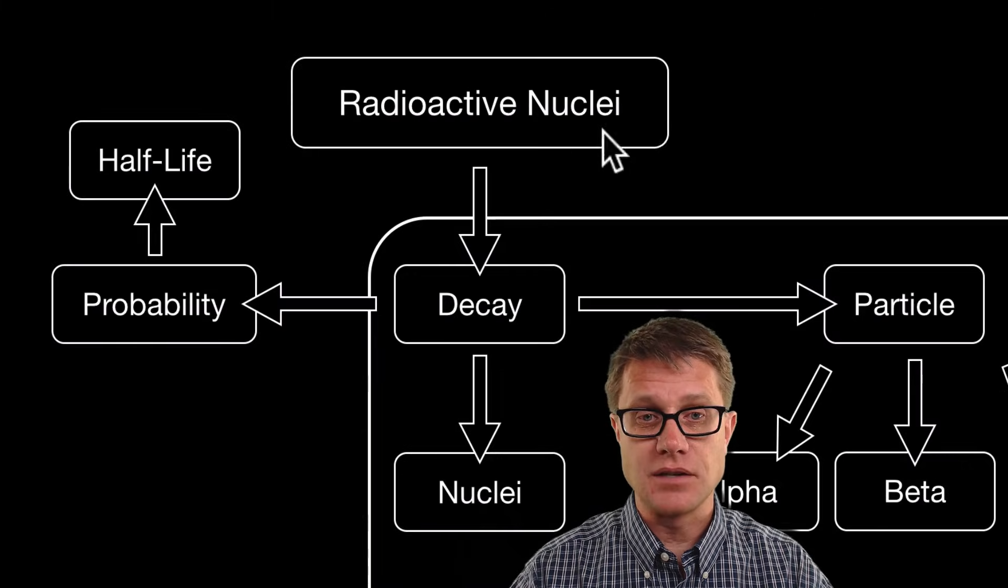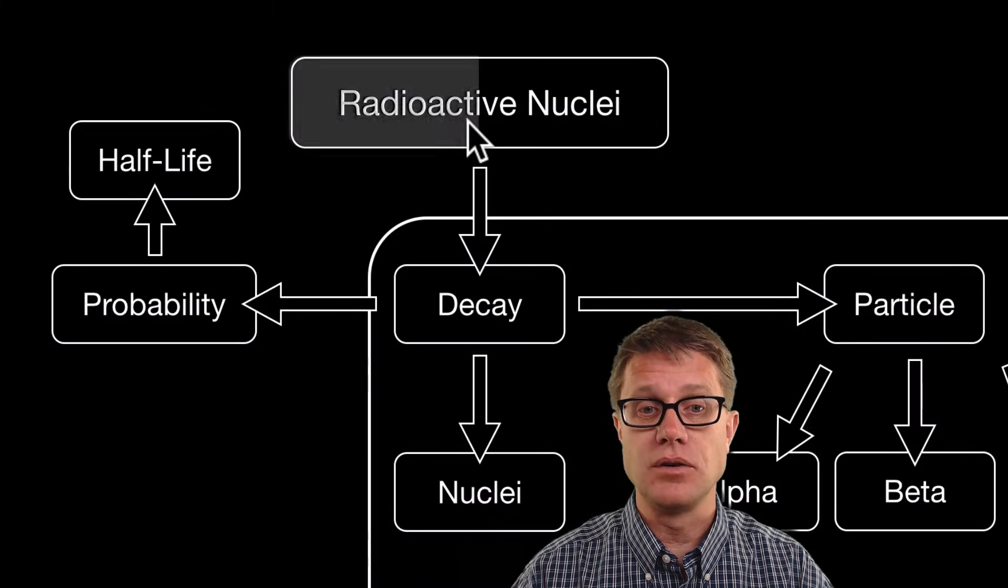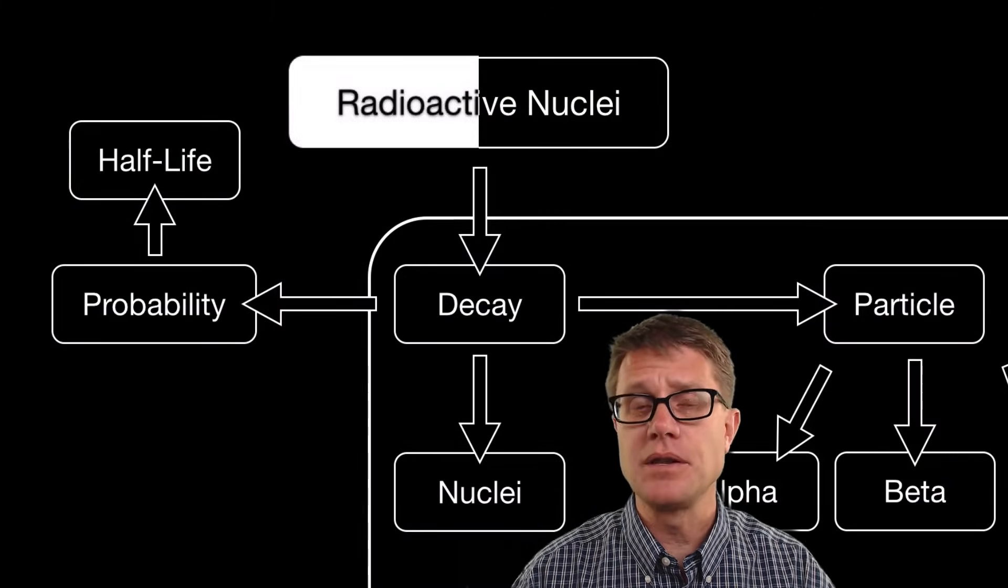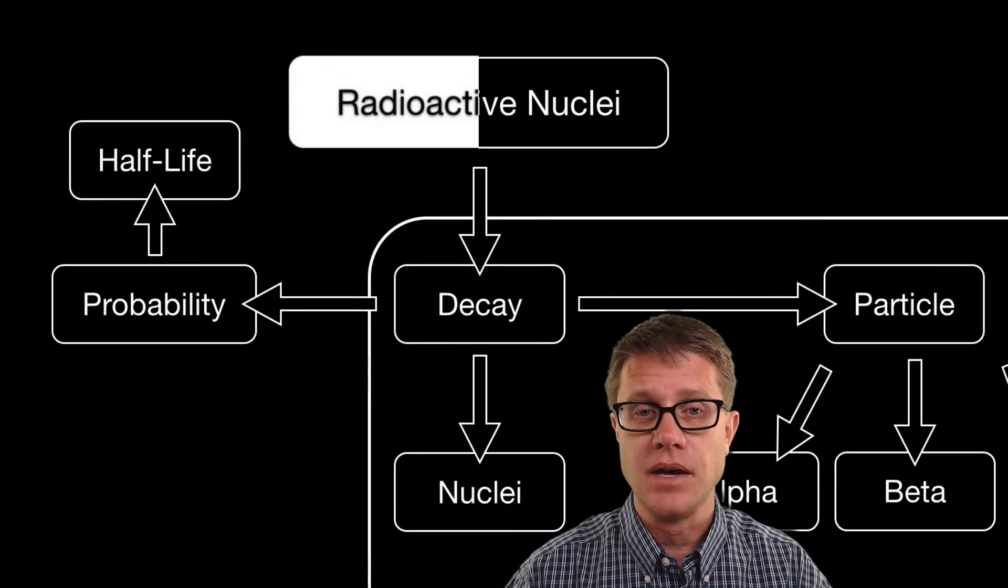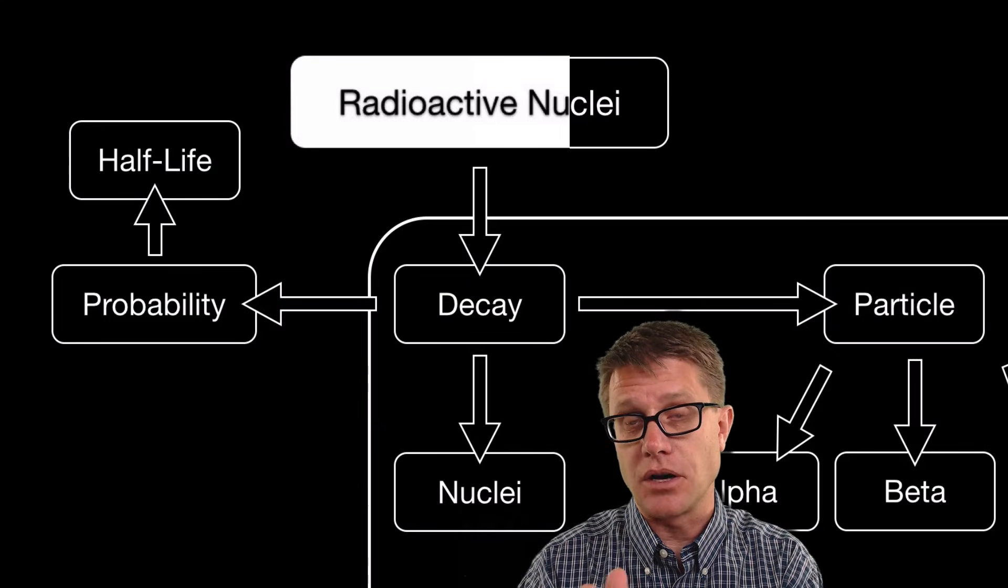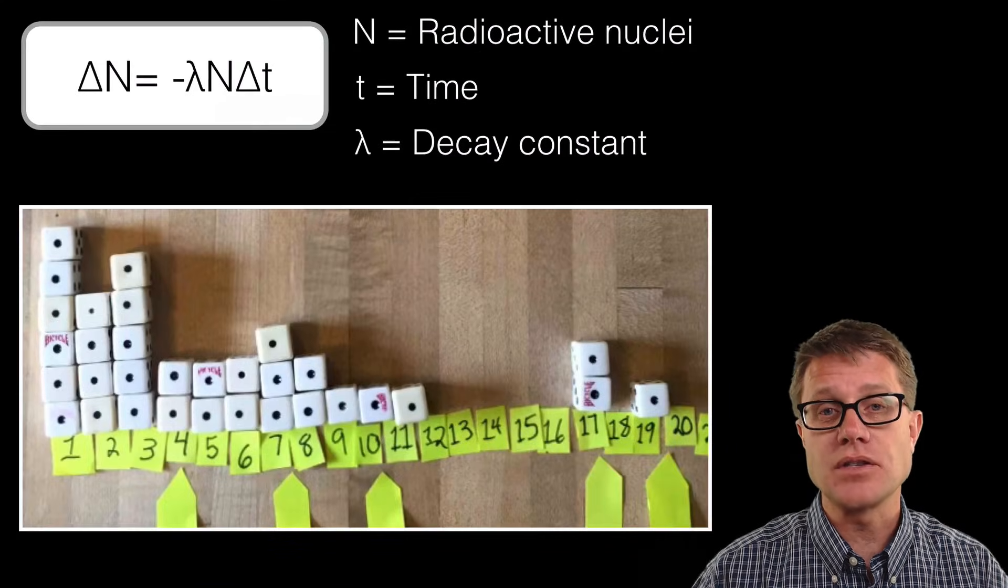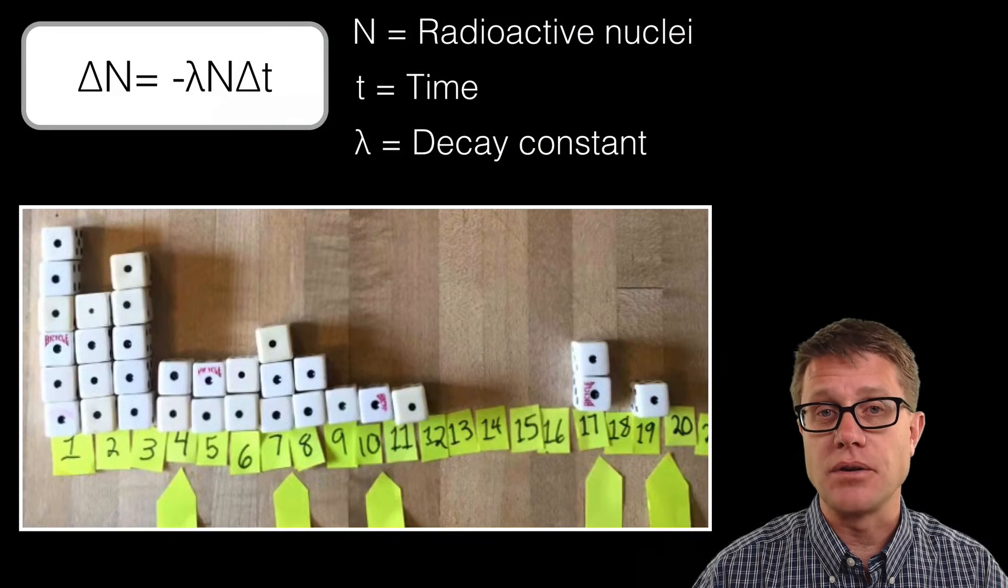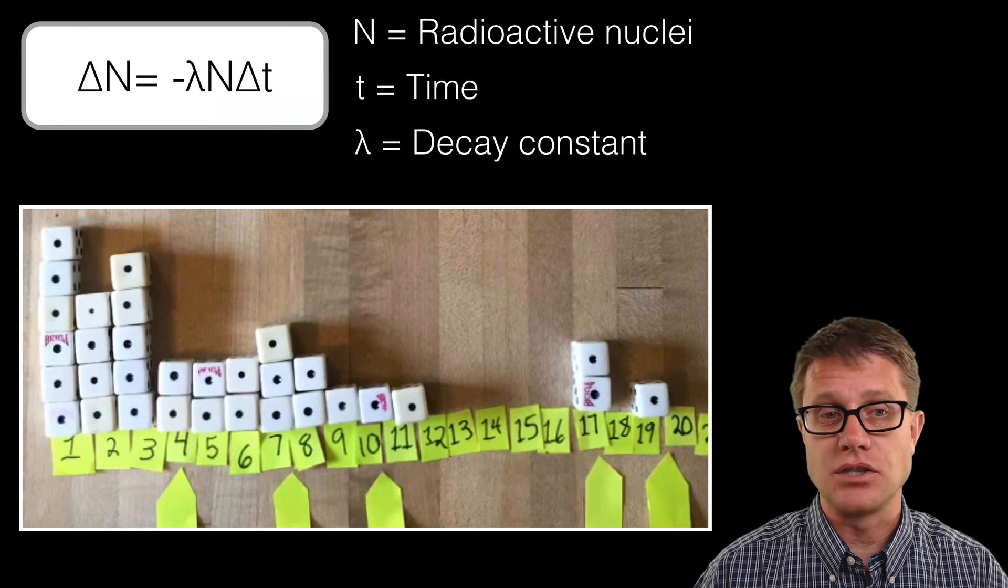In other words, if this represents all of the radioactive nuclei, that would be the time it takes for half of them to decay. Now we have got all of these ones left, and so we would have another half-life like that. We can just keep going and going. There is an equation we can use to figure out how many are going to decay at each generation.